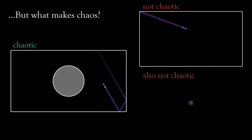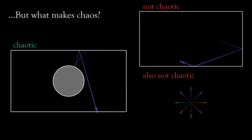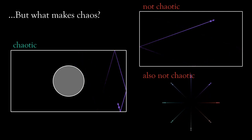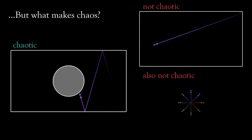Okay, so now you might ask, but what makes chaos? Why is it that some systems are chaotic and some are not?